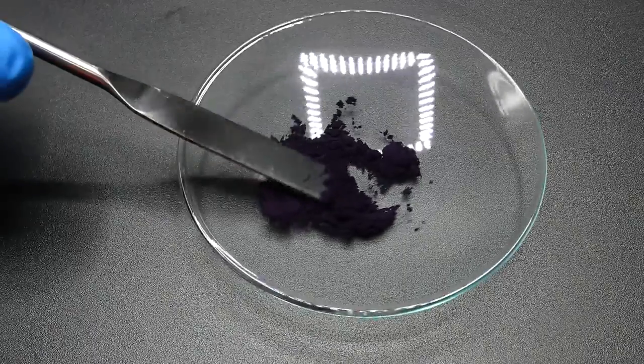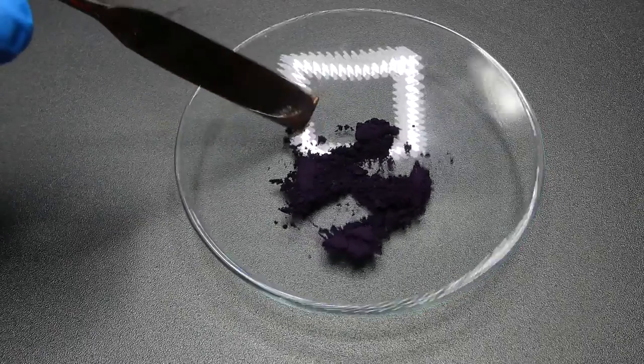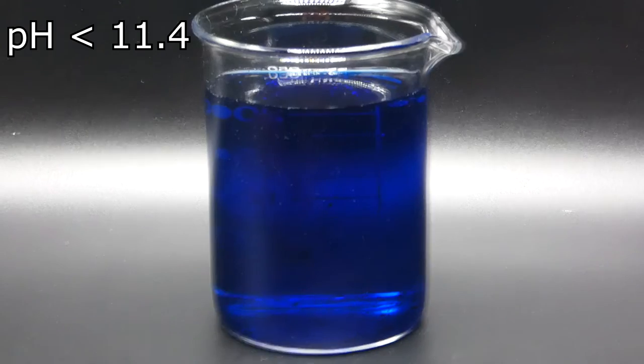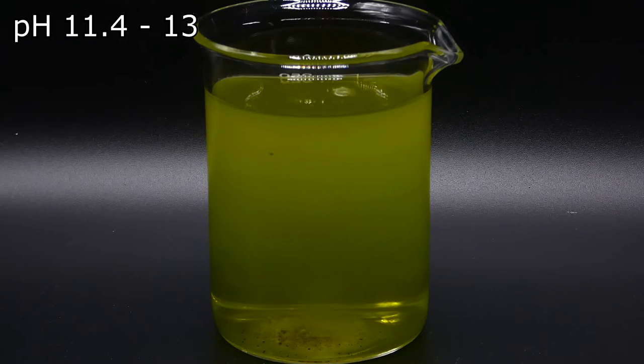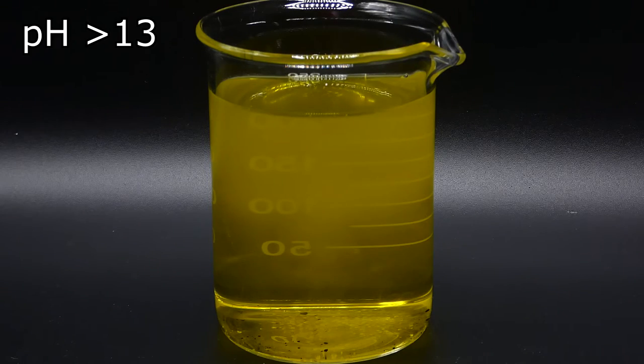Firstly, this dye is used as a pH indicator. When the pH is around 11 or less, the dye is blue. Between 11 and 13, it is green. And when it is higher than 13, it changes color to yellow.